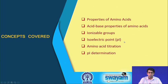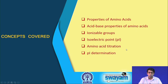We learnt about the concept of isoelectric point for amino acids, which means that the particular pH at which a particular amino acid is neutral is referred to as its isoelectric point. We learnt that this pI isoelectric point can be determined using amino acid titration, and we saw two lab experiments where we determined the pI of glycine and lysine.